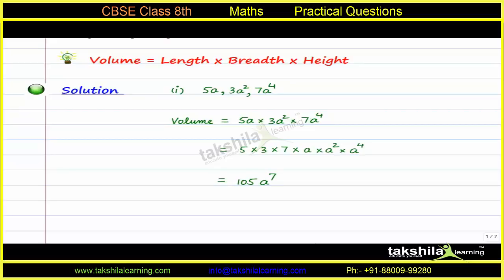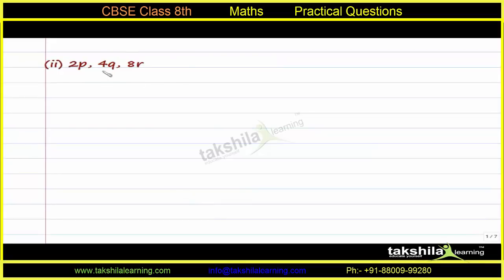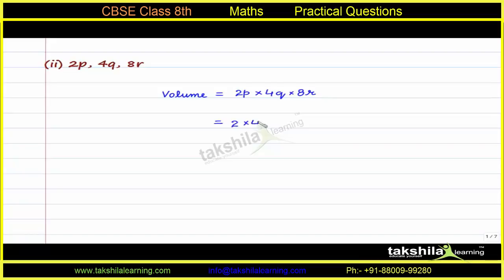In the second part, length is 2p, breadth is 4q and height is 8r. Volume is length into breadth into height, so 2p into 4q into 8r. Multiplying the numbers: 2 into 4 into 8 is 64. So the volume is 64pqr.